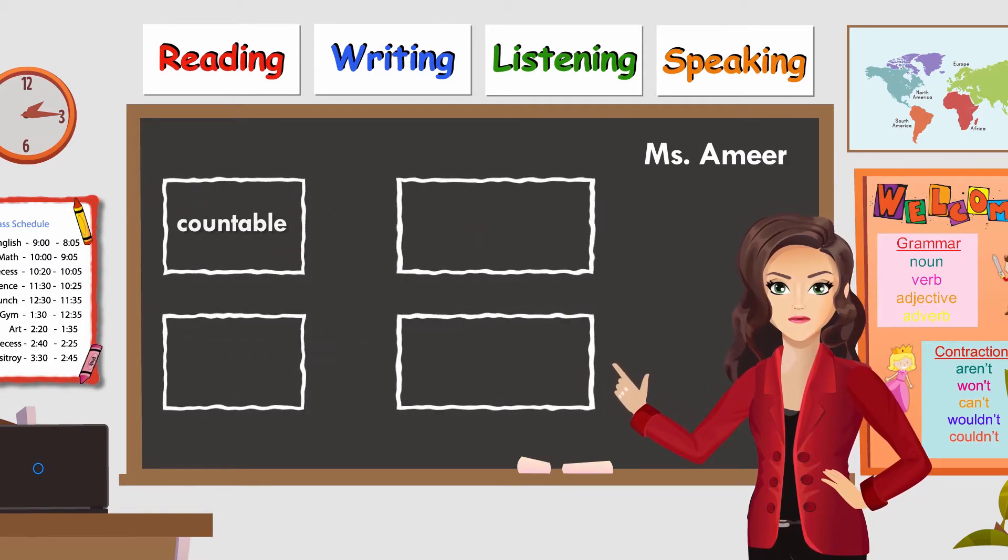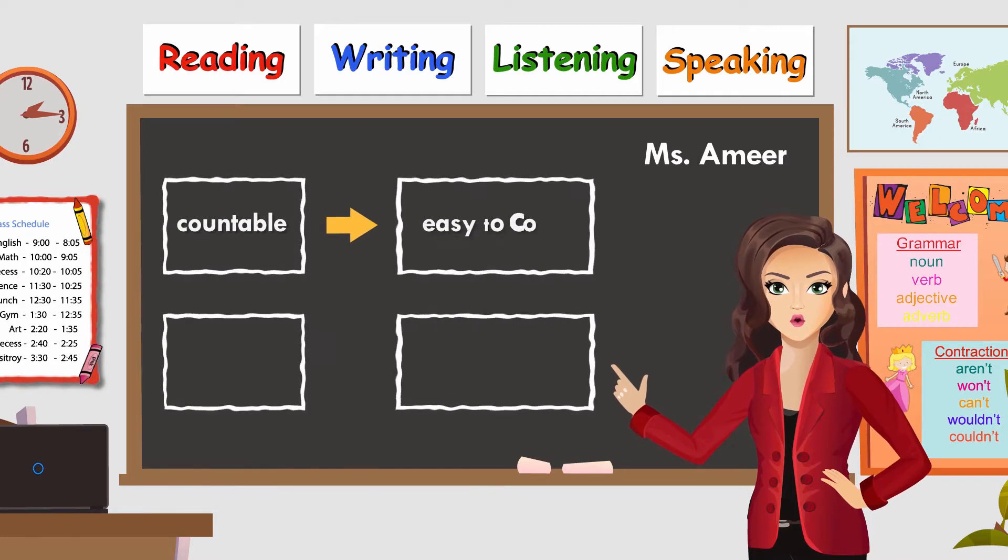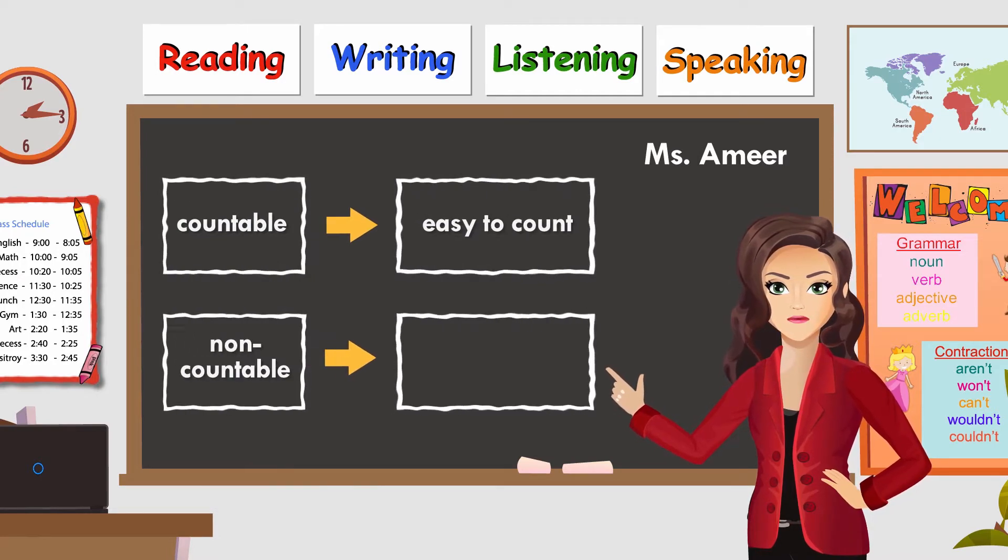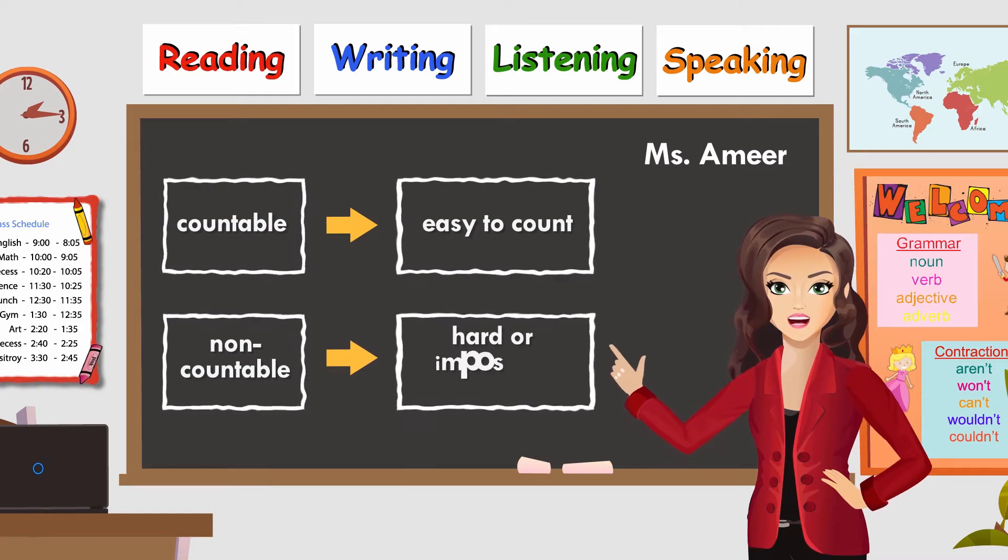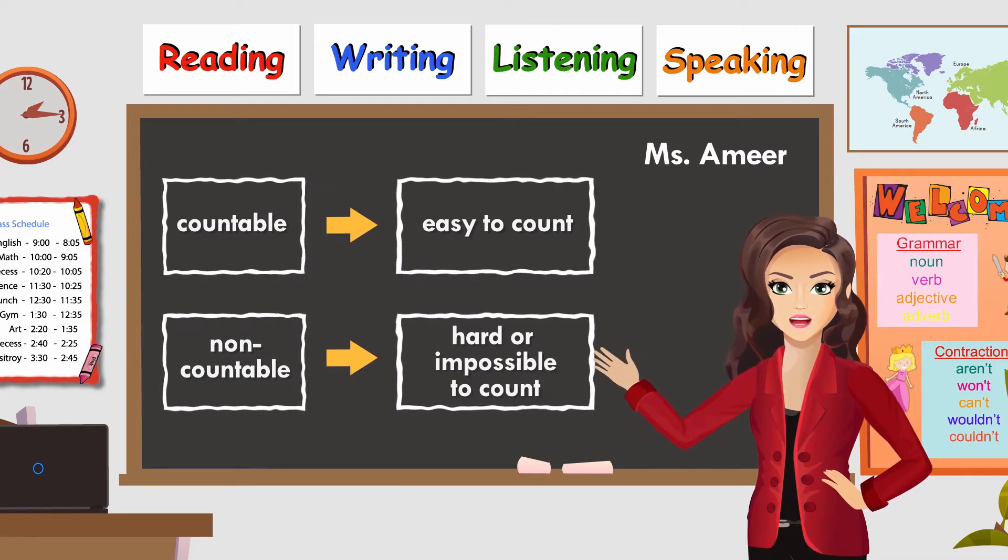Countable is something that is easy to count. Non-countable is something that is hard or impossible to count.